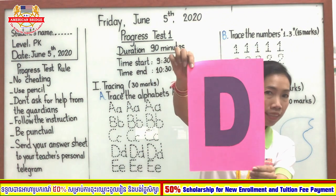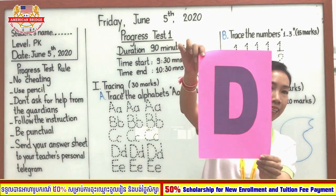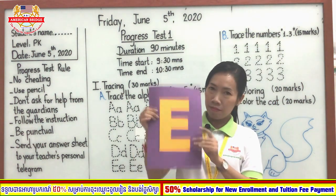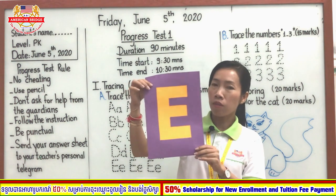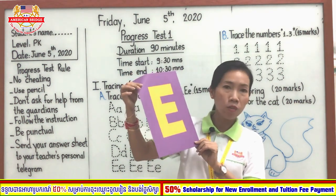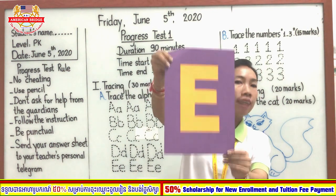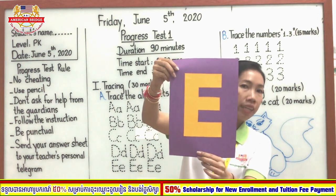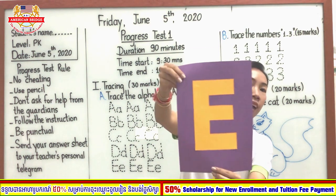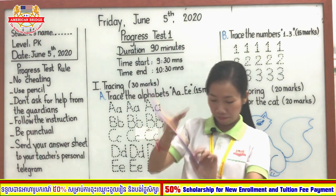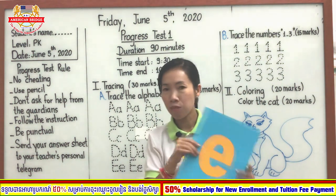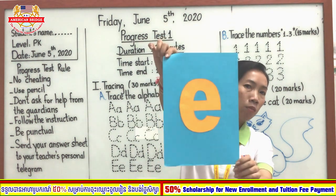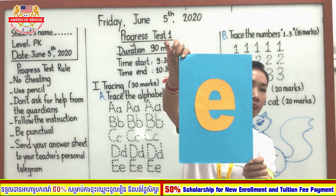What letter? Yes, capital D. We just studied on Monday and Tuesday already. Who can tell teacher what letter? Yes, letter E. You can tell me capital E or small E. Capital E. The last one that you studied already — tell me please. Yes, small letter E. Say together: small letter E.